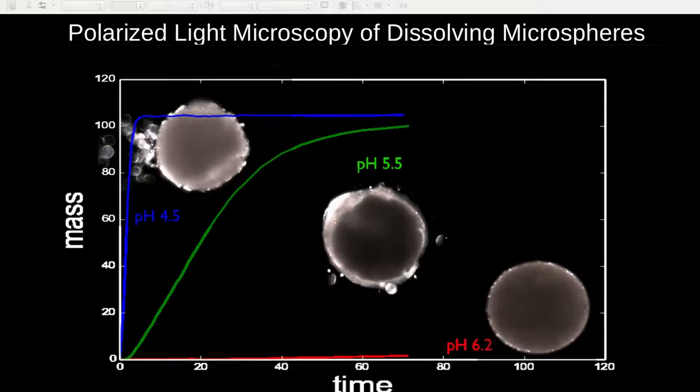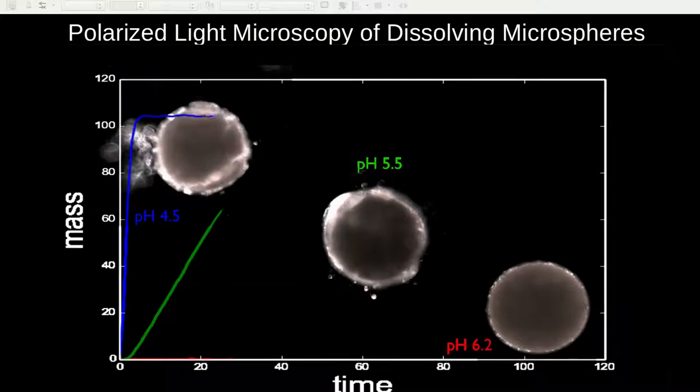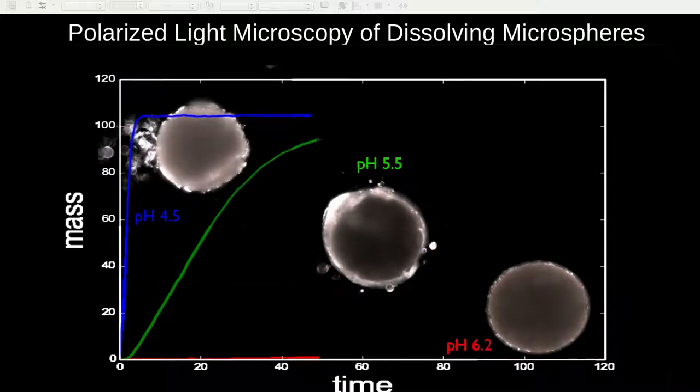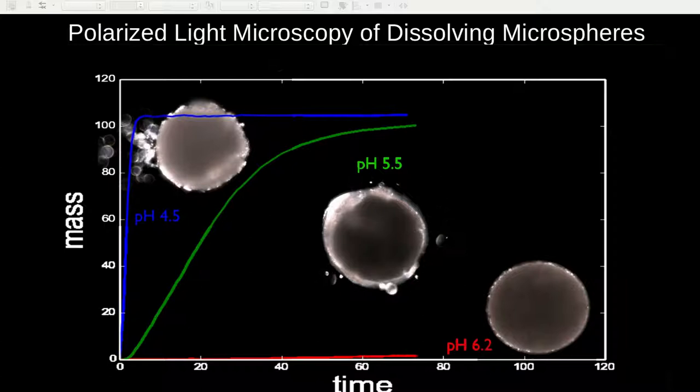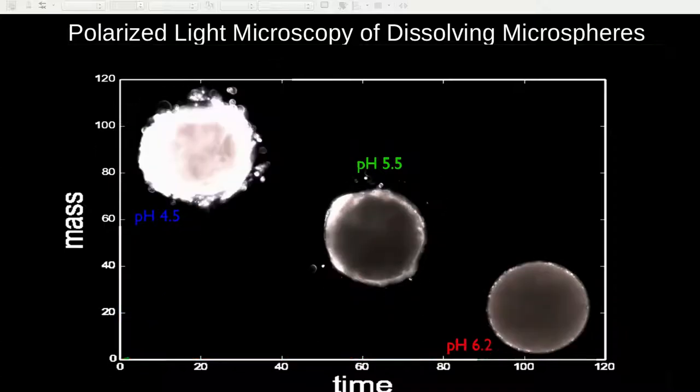The following shows polarized light microscopy video of the microspheres dissolving at various pH conditions. Overlaid on the PLM video is the mass of API released as a function of time as measured by traditional dissolution bath measurement.